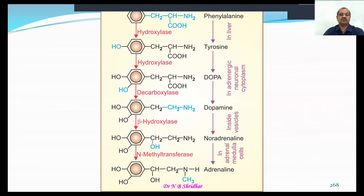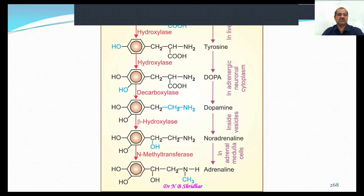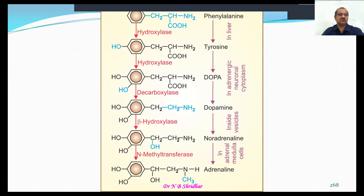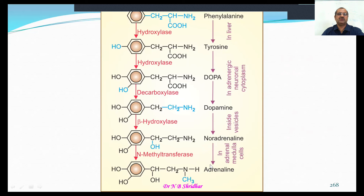Noradrenaline is converted to adrenaline by the enzyme phenylethanolamine N-methyltransferase (PNMT). All these conversions happen in adrenal medulla cells. The conversion of norepinephrine to epinephrine, and ultimately epinephrine, is stored in the chromaffin cells of the adrenal medulla. Under the influence of corticosteroids, adrenaline is released to a greater extent.